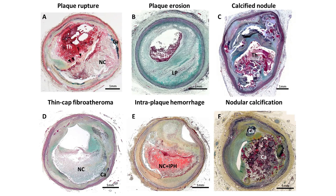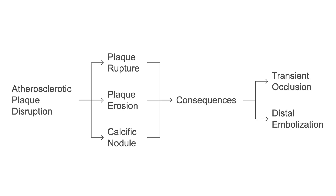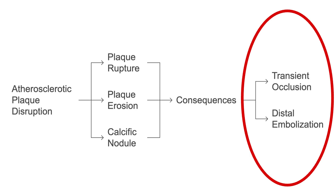Atherosclerotic causes are the most common, accounting for roughly two-thirds of MINOCA cases. These are processes related to atherosclerotic plaques that can complicate without causing significant obstruction but can still lead to myocardial injury. The most common mechanisms include plaque disruption — plaque rupture, erosion, or calcified nodule — resulting in distal embolization or a transient thrombotic occlusion. These disrupted plaques can be identified with intracoronary imaging techniques.